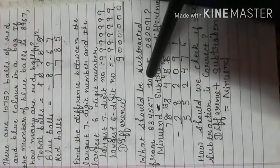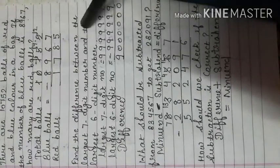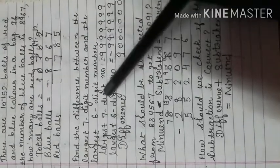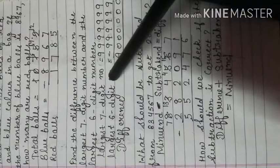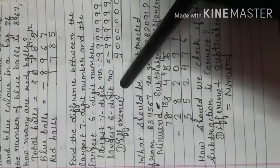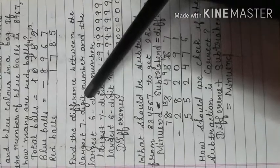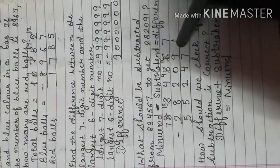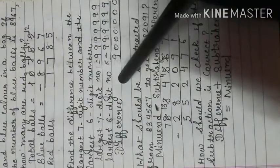Question number 4 of this exercise: find the difference between the largest 7-digit number and the largest 6-digit number. You have the largest 7-digit number and the largest 6-digit number, and you need to calculate their difference. Difference means subtraction, so before proceeding, arrange the numbers in columns.